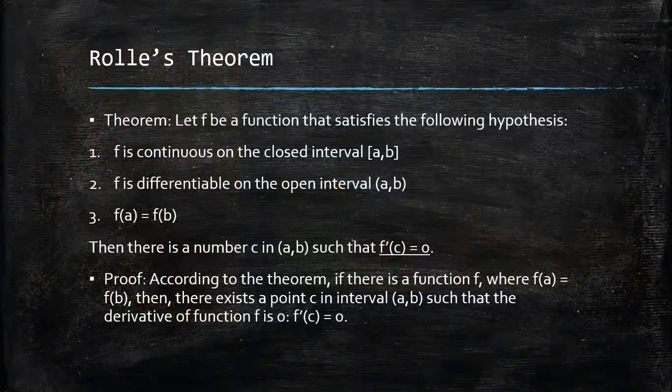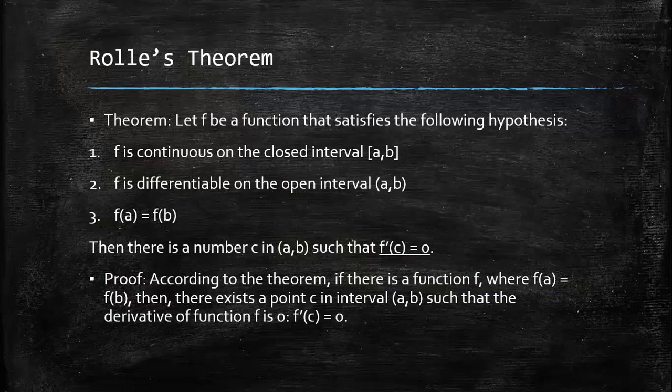So here's Rolle's theorem more in depth. Let f be a function that satisfies the following hypothesis: f is continuous on the closed interval [a, b], f is differentiable on the open interval (a, b), and f(a) is equal to f(b). Then there is a number c in (a, b) such that f'(c) is equal to zero.